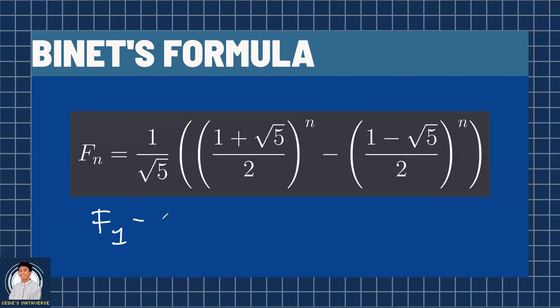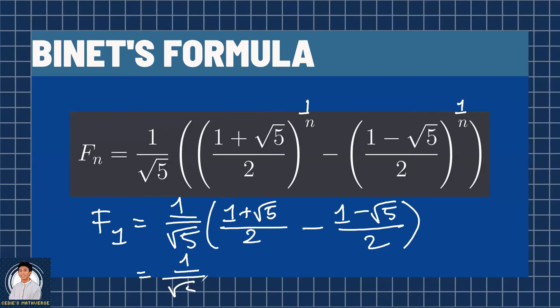So F sub 1 is equal to 1 over square root of 5 multiplied by any number raised to 1 is the number itself. So 1 plus square root of 5 all over 2 minus 1 minus square root of 5 all over 2. This is equal to 1 over square root of 5, 1 half minus 1 half is 0, and square root of 5 over 2 minus negative square root of 5 over 2 equals 2 square root of 5 over 2. The 2 cancels, the square root of 5 cancels, leaving us 1.